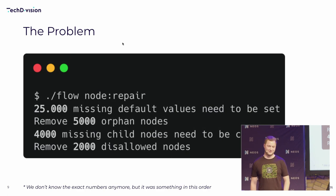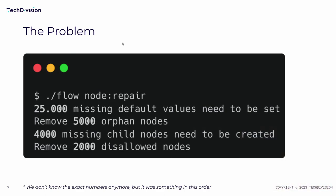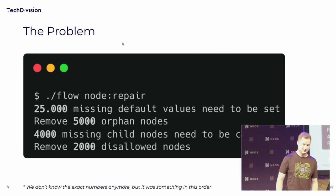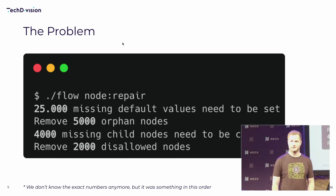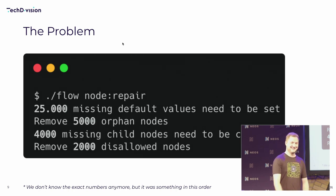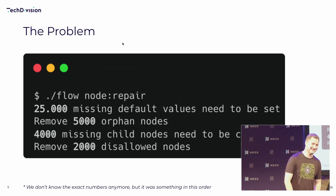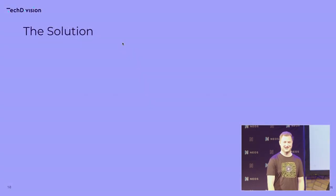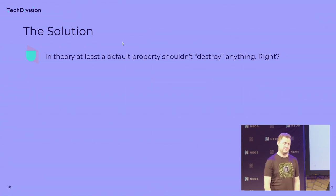And we got greeted by the following screen: 25,000 missing default values, 5,000 orphan nodes which the node repair wanted to remove, 4,000 missing child nodes, and 2,000 disallowed nodes. The exact numbers I don't know, but it was somewhere in that order. It was not a great day. How can we solve this problem? For the first part, adding default properties shouldn't destroy anything — it's a default property, so you can just add it, right?